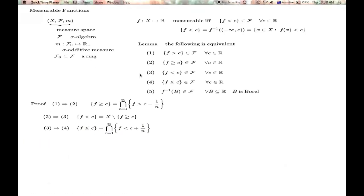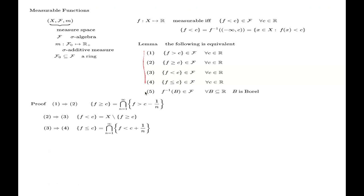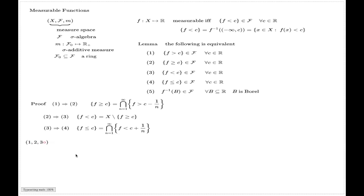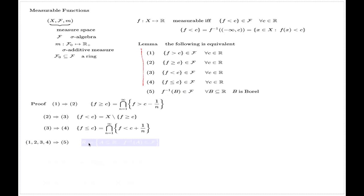Next we prove that statements 1 to 4 together imply statement 5. This is almost identical to statement 4 implying 5, since you can reverse all these implications using similar complementing identities. To show that the pre-image of every Borel set is measurable — given statements 1 to 4 — I consider the collection R of all subsets of the real line whose pre-images are measurable.